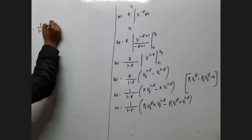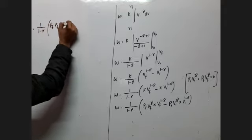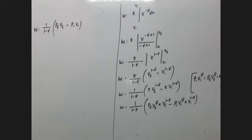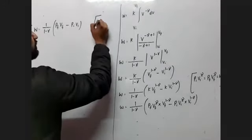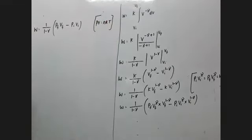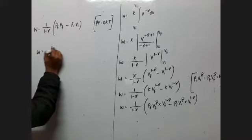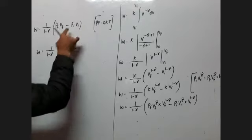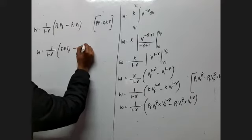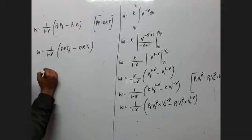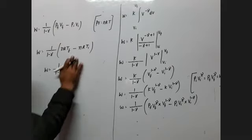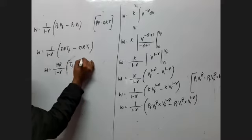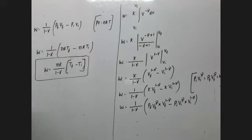After simplification, W = [1/(1−γ)] · (P_final·V_final − P_initial·V_initial). Using the ideal gas law PV = nRT, this becomes W = nR(T_final − T_initial) / (1−γ). This is the derivation of work done in an adiabatic process.